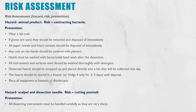Now for the risk assessment — always think about hazard, risk, and prevention. The first key hazard is if you are dissecting an animal product: the risk is you might contract bacteria or spread it to other people. There is a whole range of preventions that need to be put in place to make sure you don't contaminate the lab or yourself with bacteria.